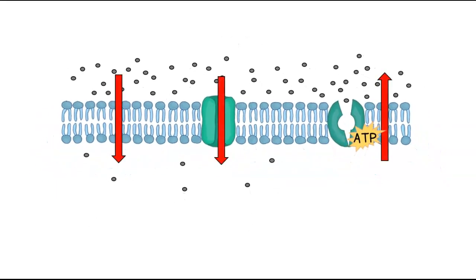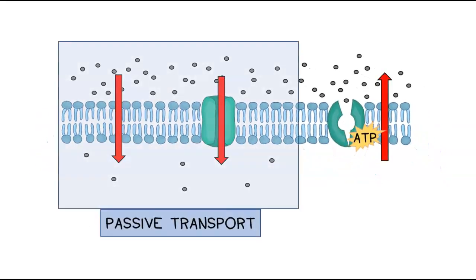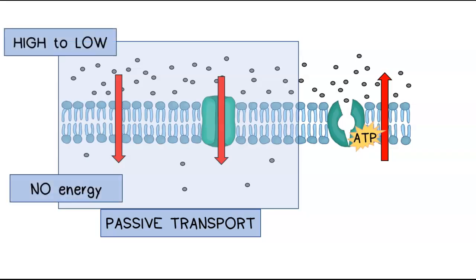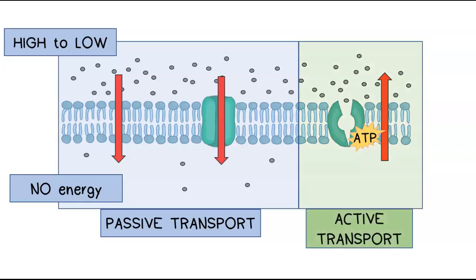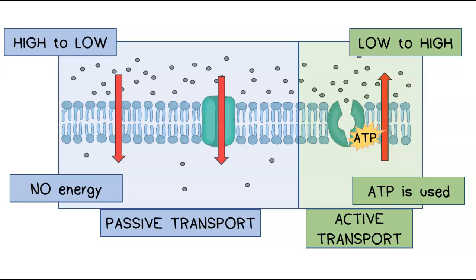Diffusion is often referred to as passive transport because the movement of molecules from high to low concentration requires no energy by the cell. Active transport requires ATP energy as molecules are moved against the flow from low to high concentration.